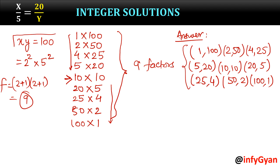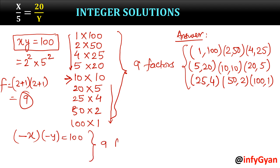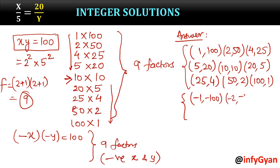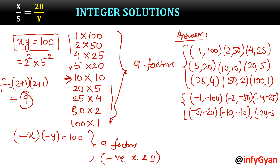Because the product xy = 100, we also have to consider that minus x times minus y equals 100. So we get 9 more factors for negative x and y. The negative ordered pairs are: (-1, -100), (-2, -50), (-4, -25), (-5, -20), (-10, -10), (-20, -5), (-25, -4), (-50, -2), and (-100, -1).